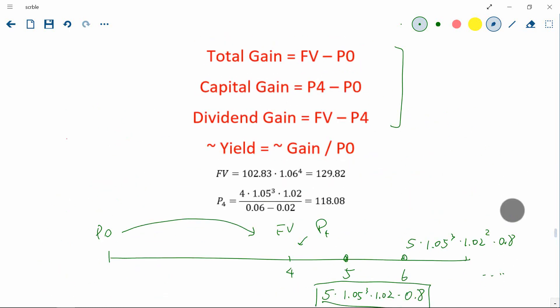And then go back to these three formulas. You can calculate all the gains and yield. For example, capital gain yield is just capital gain divided by P0 and dividend yield is just dividend gain divided by P0.